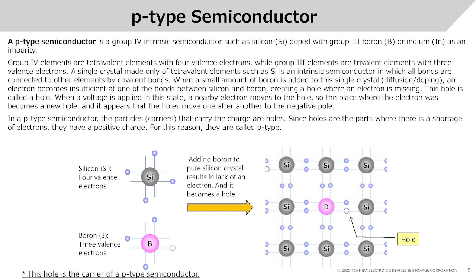P-type Semiconductor. A p-type semiconductor is a Group 4 intrinsic semiconductor such as silicon, doped with Group 3 elements such as boron or indium as an impurity. Group 4 elements are tetravalent with 4 valence electrons, while Group 3 elements are trivalent with 3 valence electrons. When a small amount of boron is added to the single crystal (diffusion/doping), an electron becomes insufficient at one of the bonds between silicon and boron, creating a hole — a place where an electron is missing.